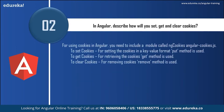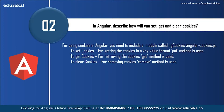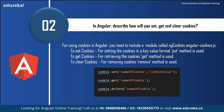How do you set, get, and clear cookies in Angular? For using cookies in Angular you need to include an Angular module called ngCookies (angular-cookies.js). For setting cookies in a key-value format, the put method is used. To retrieve cookies, the get method is used. For removing cookies, the remove method is used. You can follow the code procedure shown here.